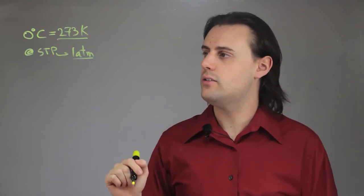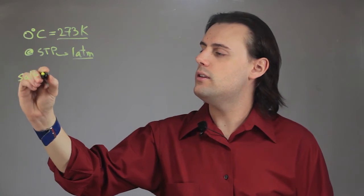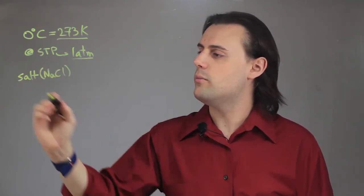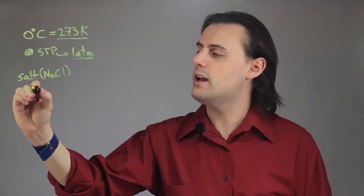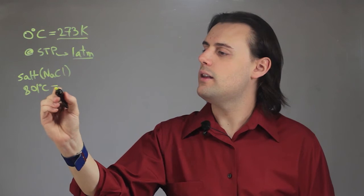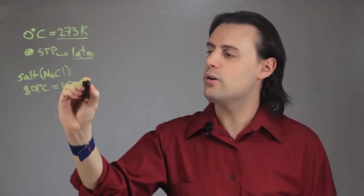Salt, on the other hand, has a much higher melting temperature. Salt is made up of sodium chloride, and salt melts at a temperature of 801 degrees Celsius. And that is equivalent to 1074 Kelvin.